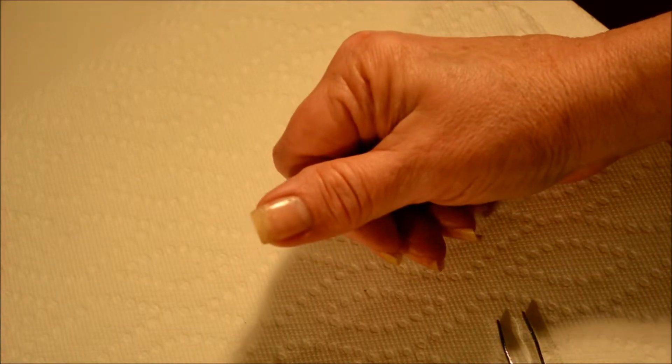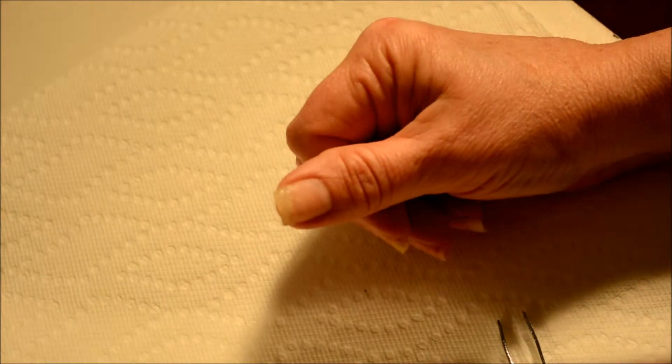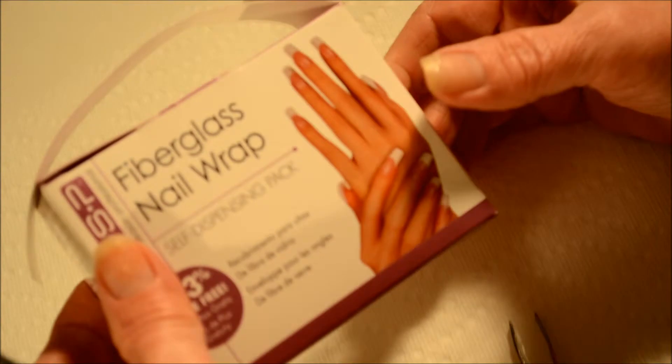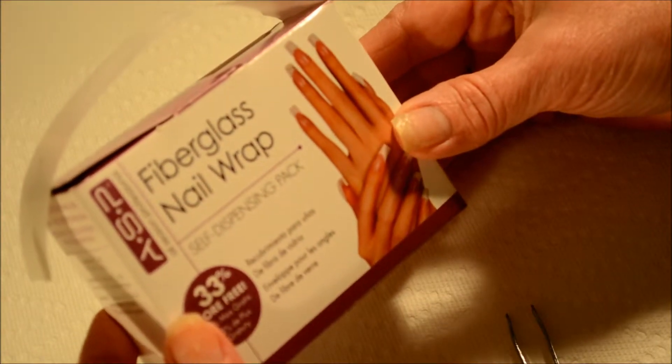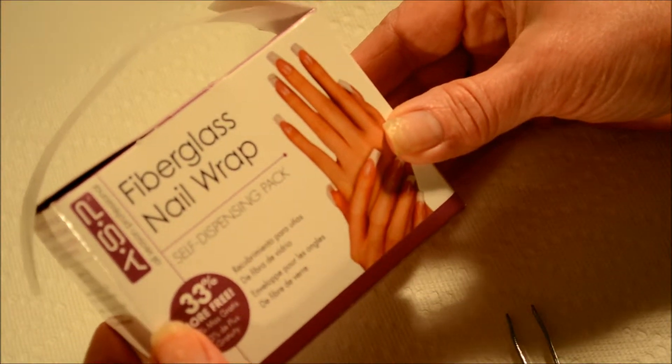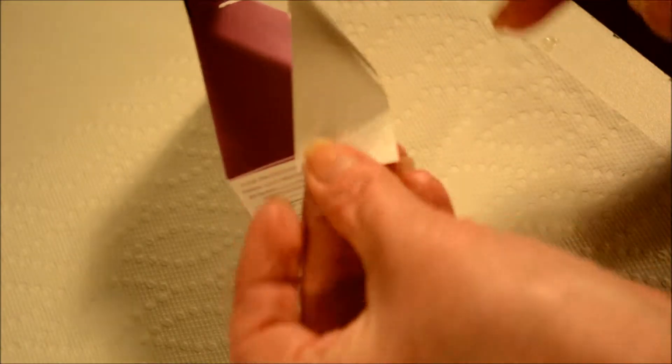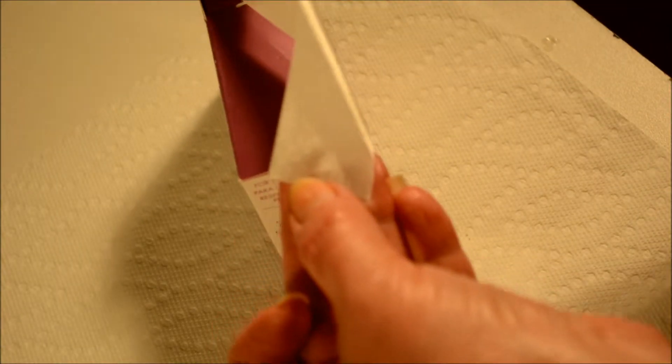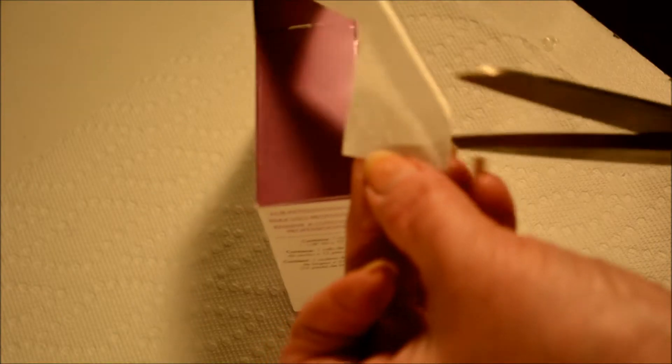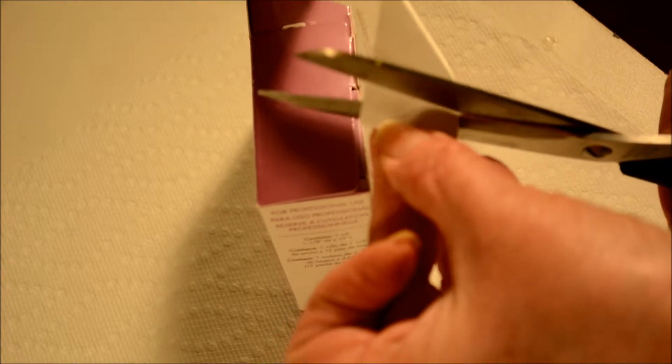And the next product I'm going to use is some fiberglass nail wrap and again I got this at Sally's as well. So I'm just going to take a small piece and you can see one side it's like wax paper and the other side you can actually see sort of a fabric on it. Just take a piece of it.